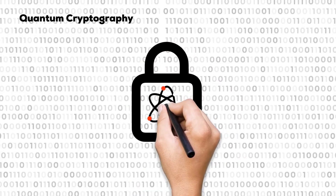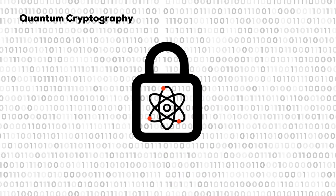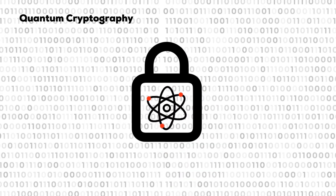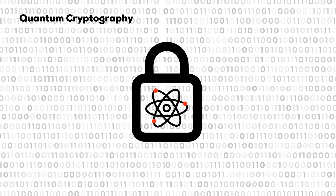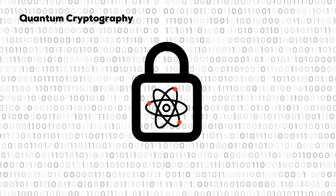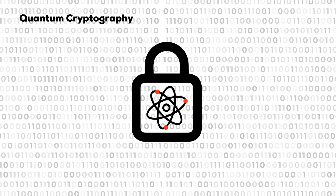Quantum cryptography is based on the principle that any attempt to intercept quantum particles along a quantum communication channel will irreversibly change the state of those quantum particles, and will be detectable by the parties exchanging information. But what do we mean by this?